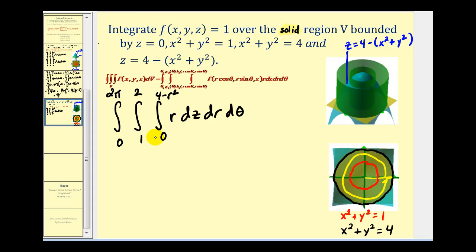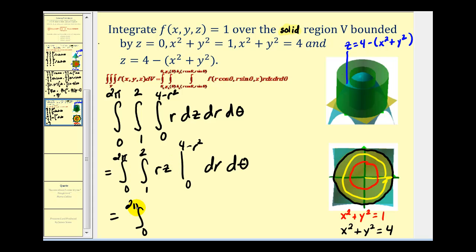As we'll see in the next video, when f(x, y, z) = 1, this triple integral gives us the volume defined by the limits of integration. Let's integrate with respect to z first. Since r is a constant, we get rz evaluated from 0 to 4 − r², giving r(4 − r²) = 4r − r³.